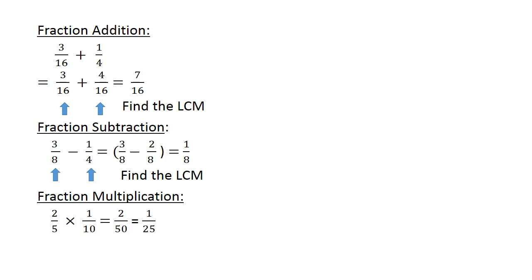Fraction multiplication: 2 over 5 times 1 over 10. 2 times 1 over 5 times 10 equals 1 over 25.